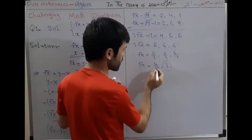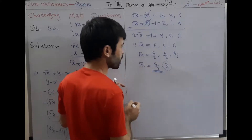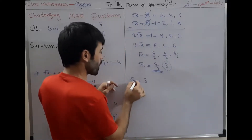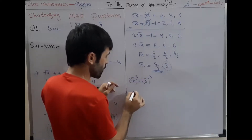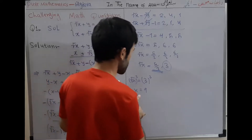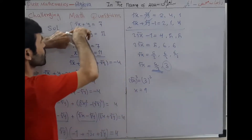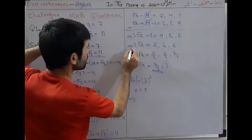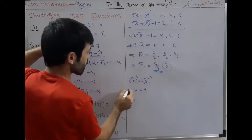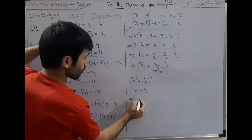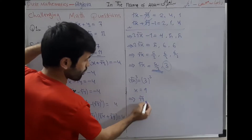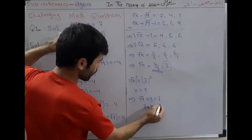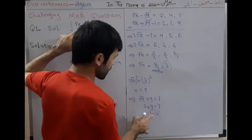We verify that square root of x equals 3. Squaring both sides: x is equal to 9. Now substituting x equals 9 back into the first equation — square root of 9 plus y equals 7 — we get 3 plus y equals 7, so y is equal to 4.